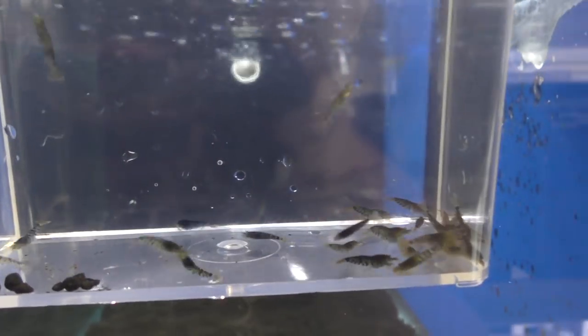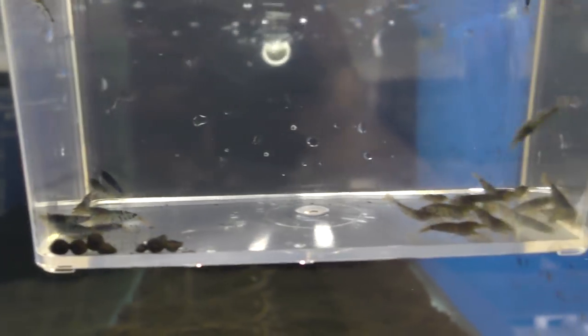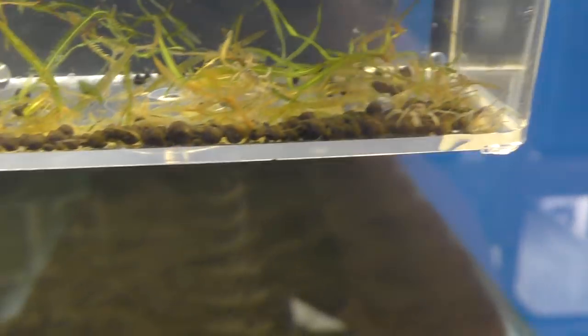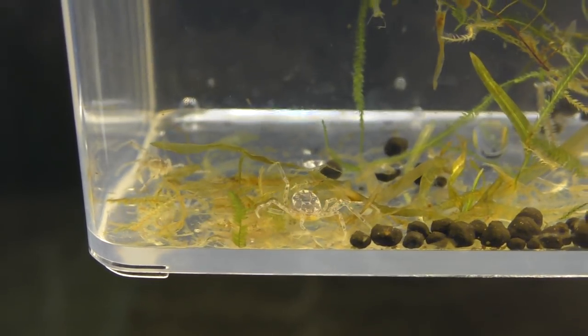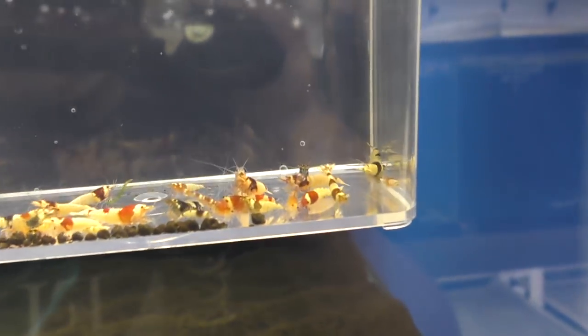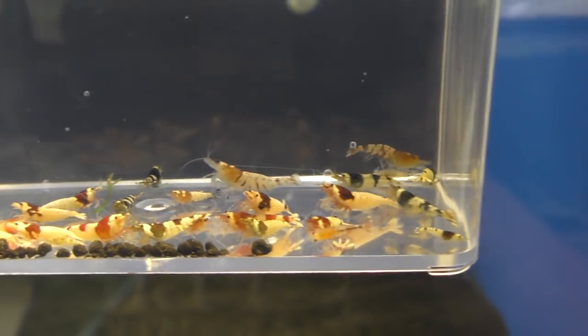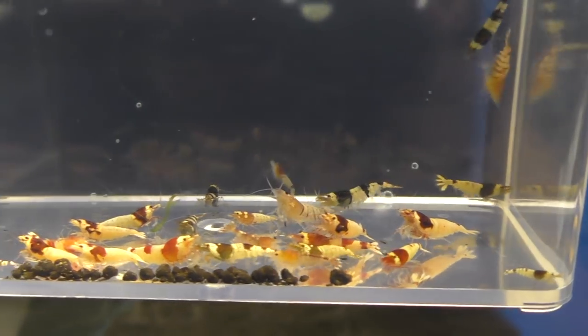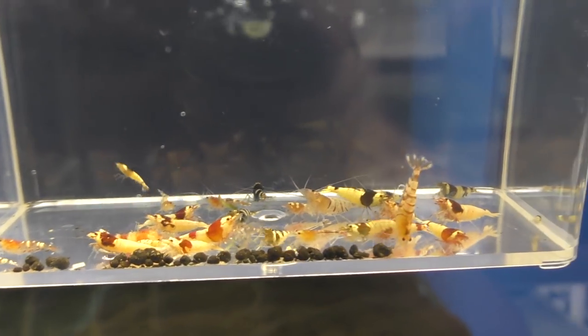And here's some of the other stuff we pulled out. These are black fancy tigers. Looking really good. These are Thai micro crabs. There's one right there. A couple in there. And we got, I guess, these are just some mixed Taiwan bees. Some crystal reds in there. Different stuff like that. So more or less it's just a mixed Caridina tank.